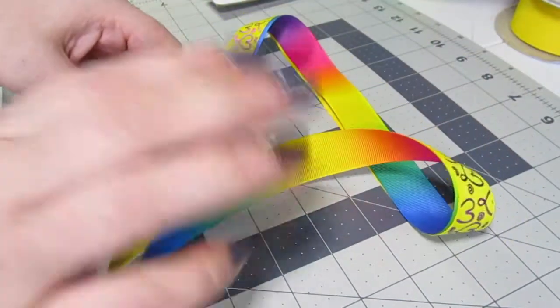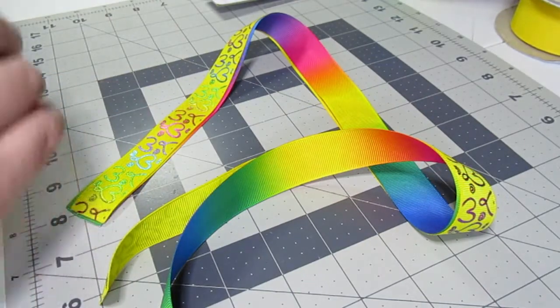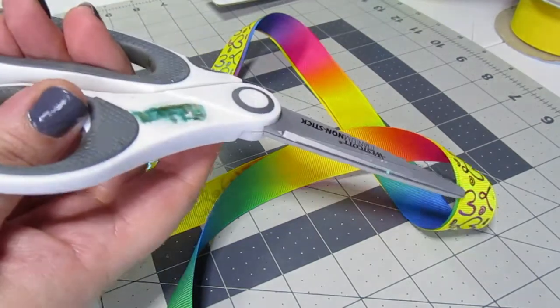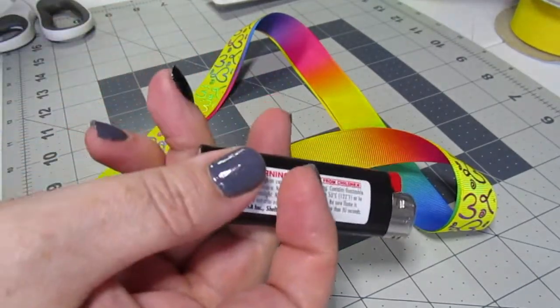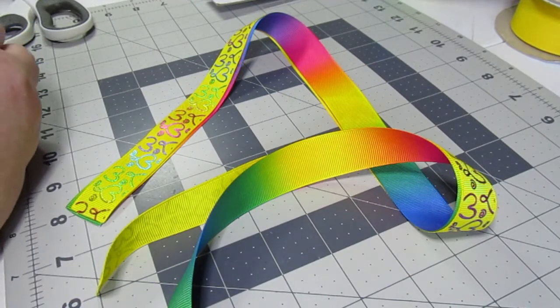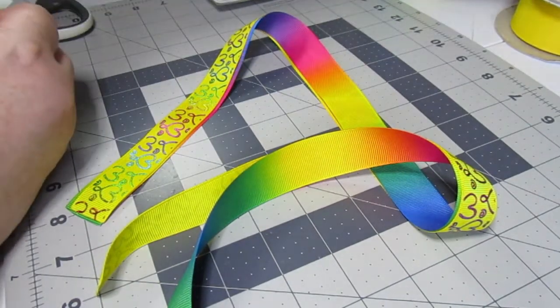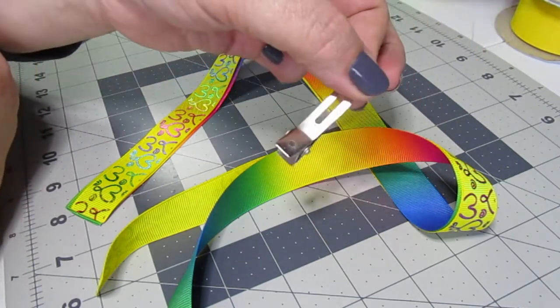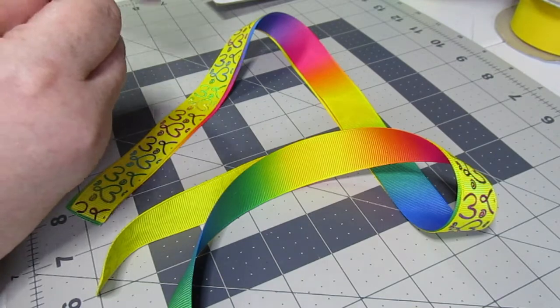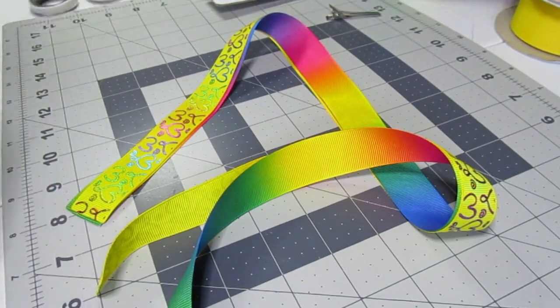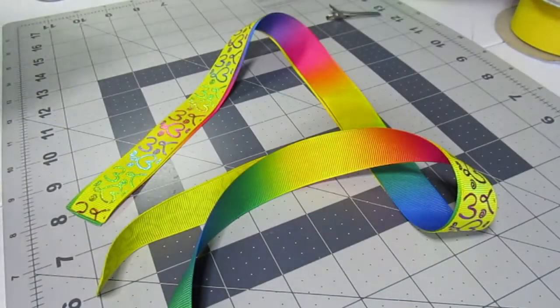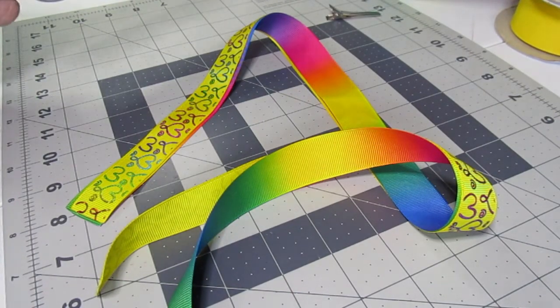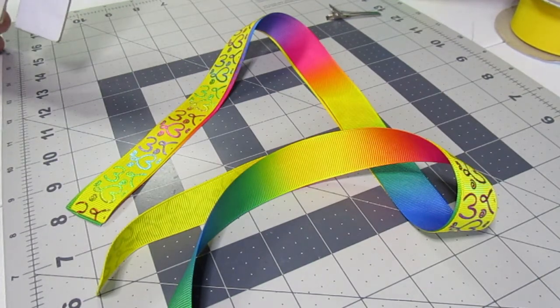So you are going to need ribbon, you're going to need needle and thread, scissors, lighter, the clip of your choice. For this one I am just going to be using a double prong clip that I will line. You're going to need the template I mentioned. You will also need a hot glue gun to attach everything. Mine is off camera.